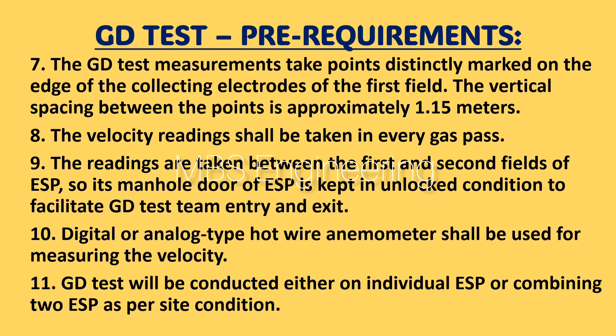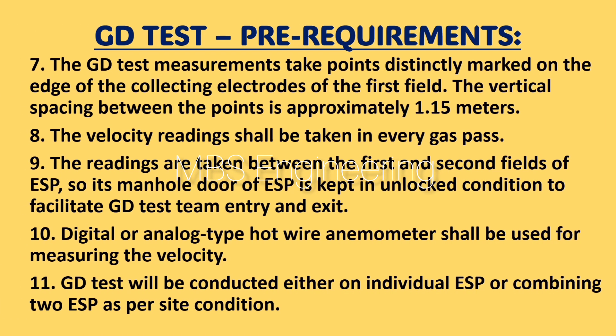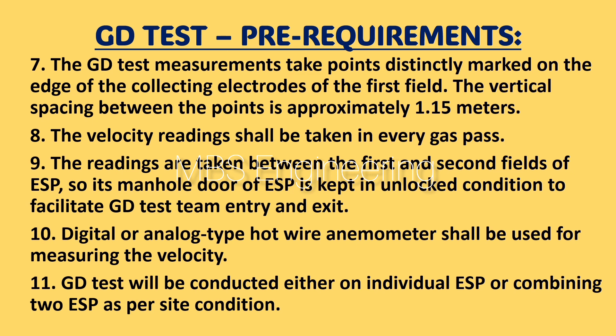Point 9: readings are taken between the first and second fields of the ESP, so the manhole door of the ESP is kept in an unlocked condition to facilitate GD test team entry and exit. Point 10: a digital or analog type hot wire anemometer shall be used for measuring velocity. Point 11: the GD test will be conducted either on individual ESP or combining two ESPs as per site condition.